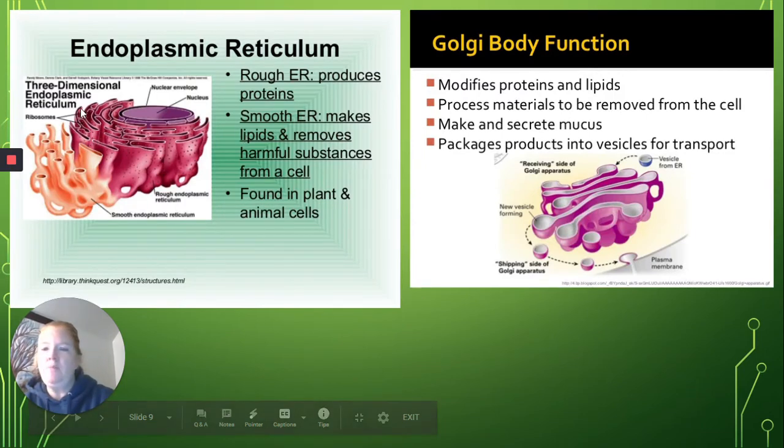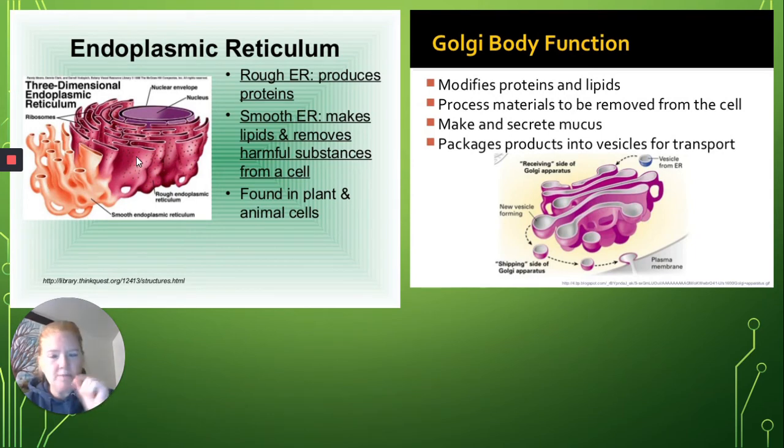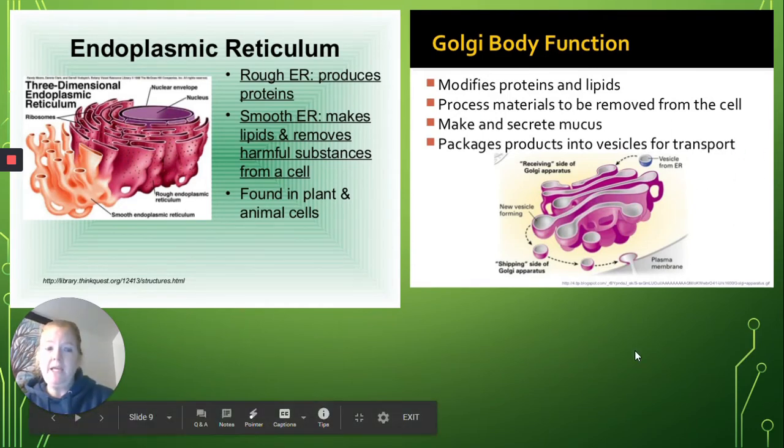There are two types of endoplasmic reticulum. There's rough, which has the ribosomes on it, and the smooth, which does not. And then the Golgi body, Golgi apparatus, is what is primarily going to modify, also package, and decide where it goes.